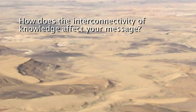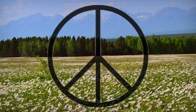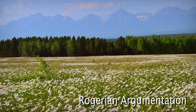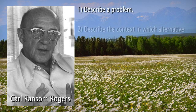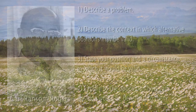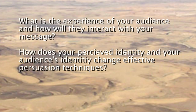Question: how does the interconnectivity of knowledge affect your message? How do analogy, metaphor, symbolism, and significance influence persuasion? Think about it. In 1970, some guys named Young, Becker, and Pike got together and developed Rogerian argumentation based upon the ideas of an American psychologist named Carl Ransom Rogers. The idea is you need to understand the opposing arguments to make a good argument yourself. To do this: describe a problem, describe the context in which alternative positions may be valid, state your position and a circumstance in which it would be valid, and explain to the opposition how your position would be beneficial to them. Question: what is the experience of your audience and how will they interact with your message? How does your perceived identity and your audience's identity change affective persuasion techniques? Think about it.